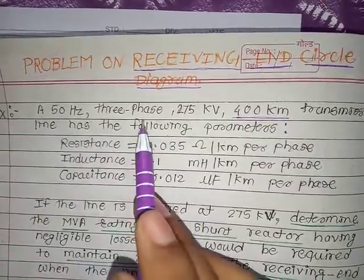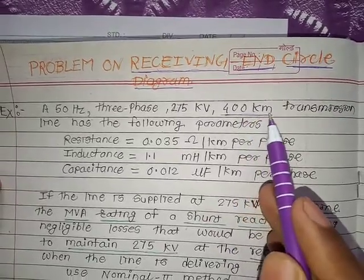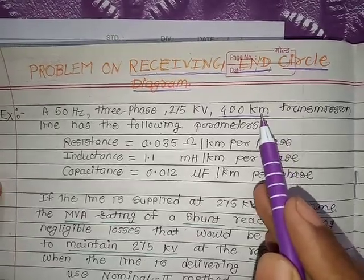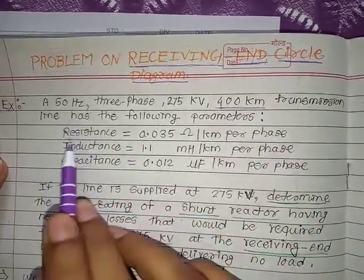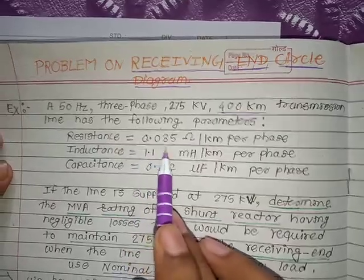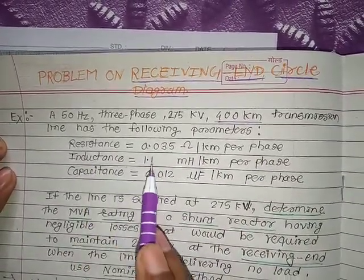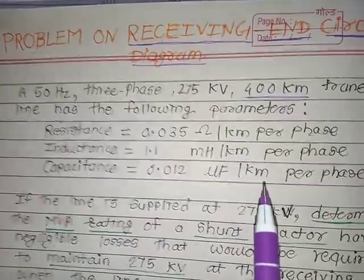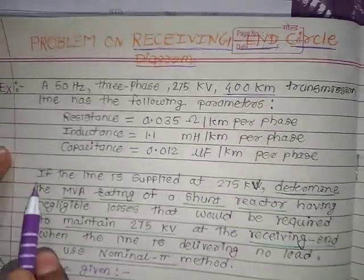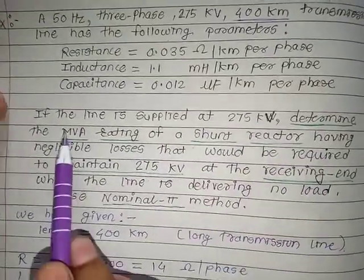A 50 Hz, 3-phase, 275 kV, 400 kilometer transmission line — since it is 400 km, this is a long transmission line. The line has the following parameters: R = 0.035 ohm per kilometer per phase, inductance = 1.1 milli-henry per kilometer per phase, and capacitance = 0.12 microfarad per kilometer per phase.